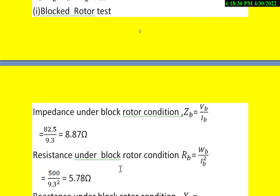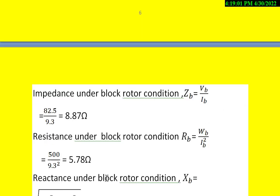Resistance under blocked rotor condition: RB = WB/IB². WB is 500W and IB is 9.3A. After simplification, RB = 500/9.3² = 5.78Ω.